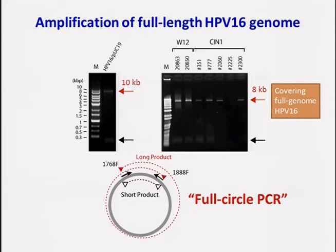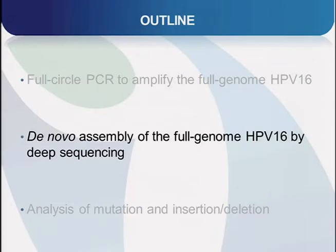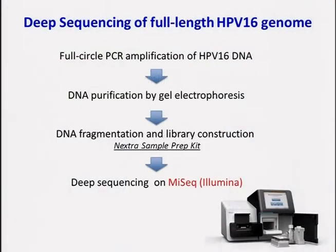Importantly, this full circle PCR is applicable to native HPV-16 genome in W12 cells and clinical samples. Here I show the flow of our deep sequencing procedure. First, we amplify HPV-16 DNA by full circle PCR. Then the DNA is purified, fragmented, and converted to a library that is readable for deep sequencers.